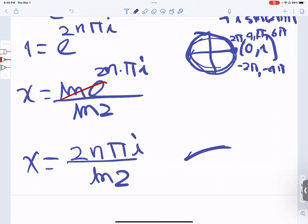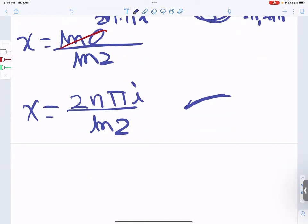This is the solution, all solutions for this equation: 2 to the x power equals 1.